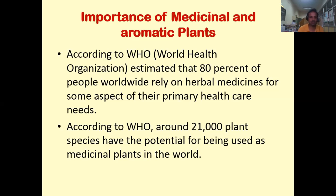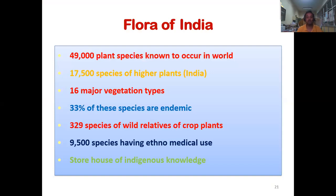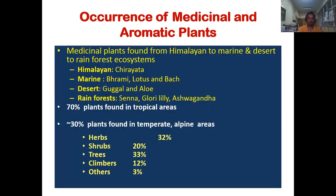Looking at the flora of India, we have around 49,000 plant species in our country, of which there are 17,500 species of higher plants present in 16 major vegetation types. About 33% of these species are endemic to India. Of these, 329 species are wild relatives of crop plants, and 9,500 species have ethno-medicinal value. Our country is also known as the storehouse of indigenous knowledge about the uses of plants in various systems of medicine.